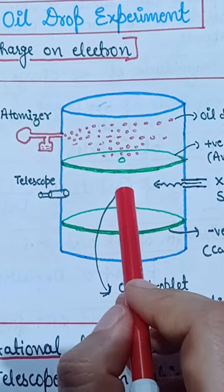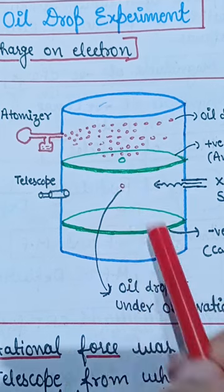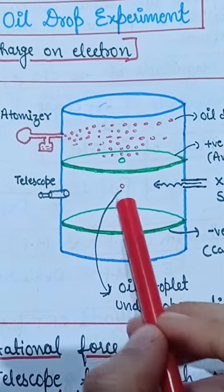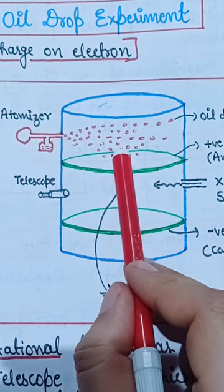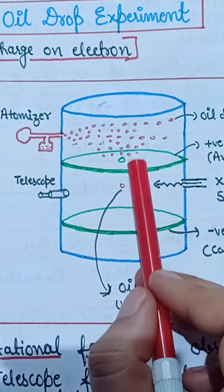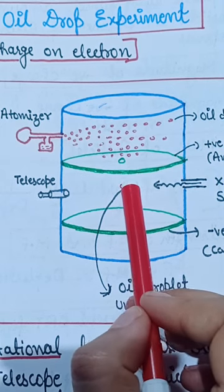There are X-rays here so that a negative charge is produced. See, there are two forces on this droplet: one is gravitational force acting downward due to gravity, and the electrostatic force acting upward, which attracts toward the positive plates because the droplet is negatively charged.